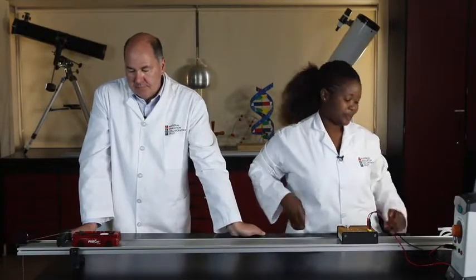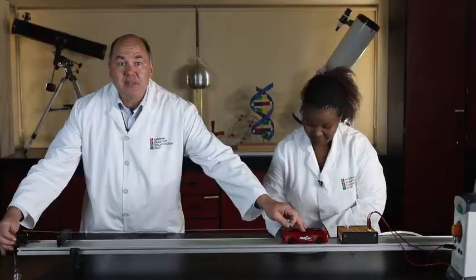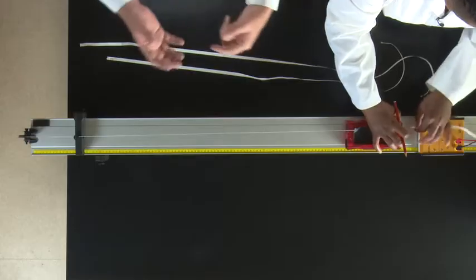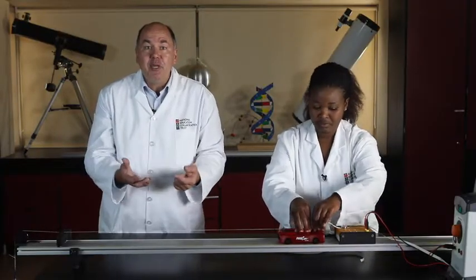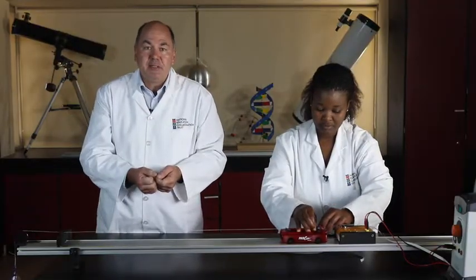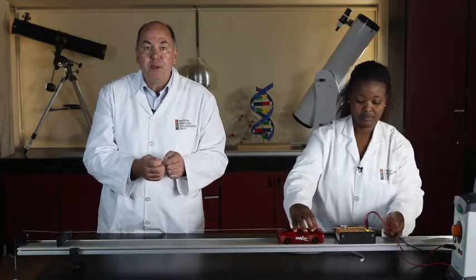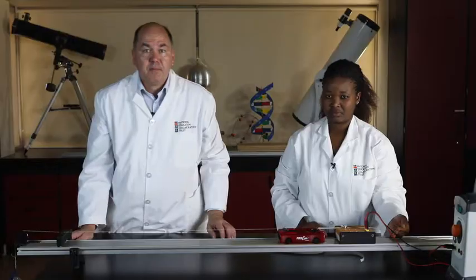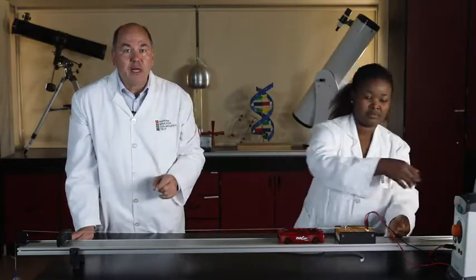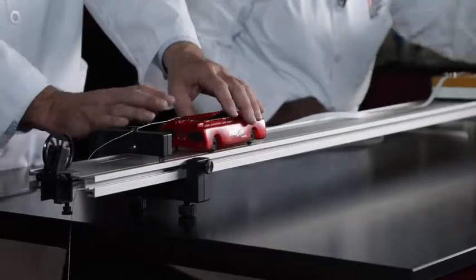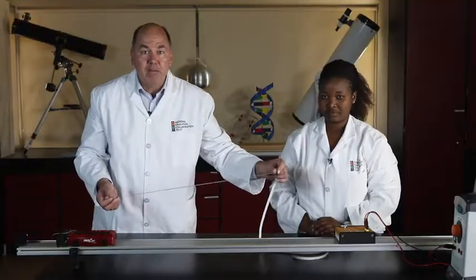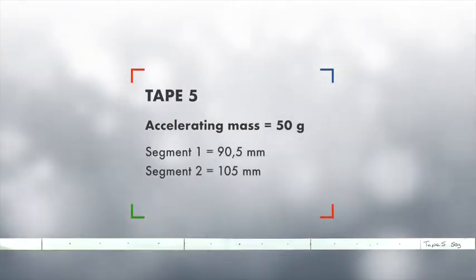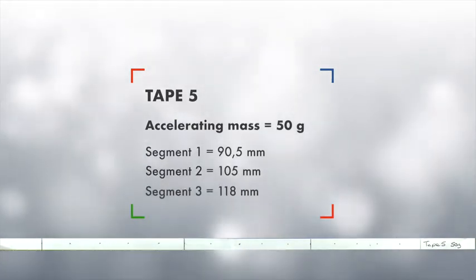We are taking 5 sets of measurements to confirm a trend in the variation of acceleration with net force. More readings give greater reliability. We move the last mass piece onto the hanger for the final run. Results for tape 5: the accelerating mass is 50 grams; segment 1 is 90.5mm, segment 2 is 105mm, segment 3 is 118mm.